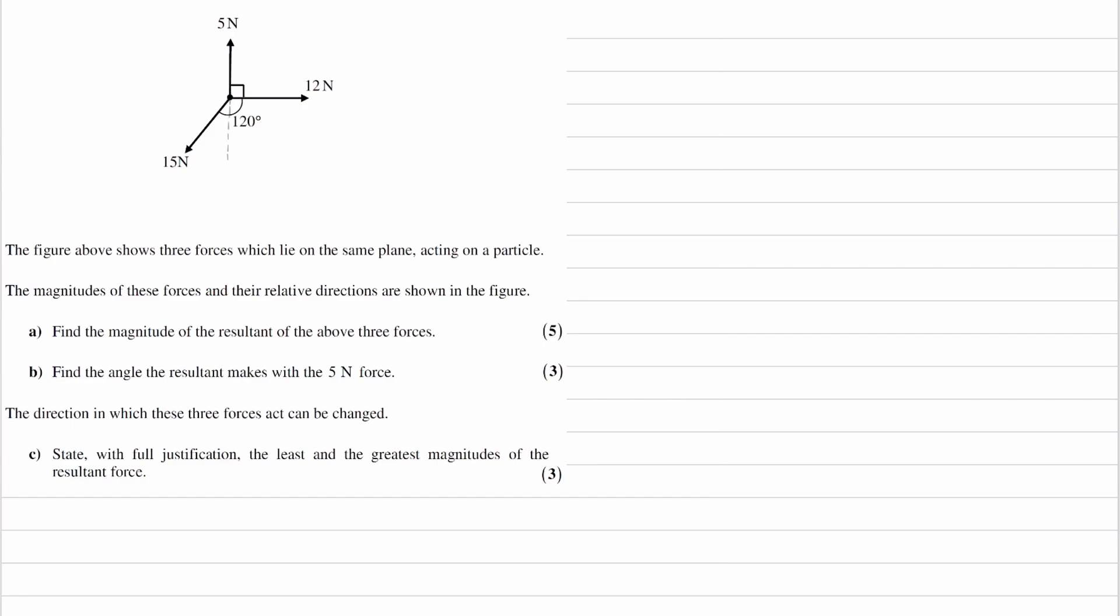So what I'd start by doing is drawing a line down. This angle must be 30 degrees, as we know that this here must be 90, so 120 minus 90 is 30. And then we can use SOHCAHTOA.